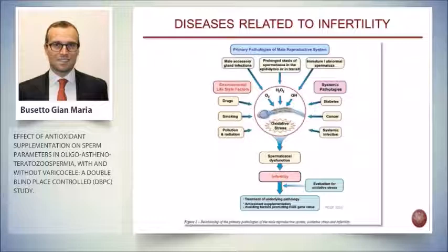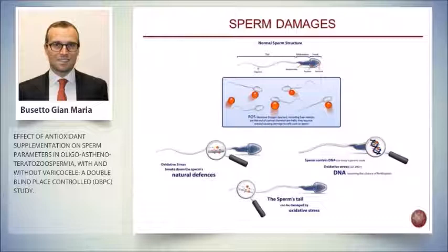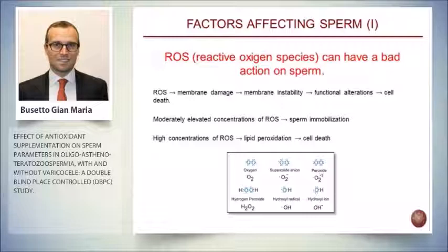All of these causes of infertility are related to oxidative stress. Oxidative stress is the main topic of today — it's what we need to understand to move toward therapy and what we can do against infertility. Sperm is highly related to oxidative stress because it can cause many different kinds of damage to all parts of the sperm: the tail, the head with its DNA material, and even the sperm's natural defenses. ROS — reactive oxygen species — are like pinballs bouncing against the sperm, creating damage. The more ROS you have, the greater the chance of damage.